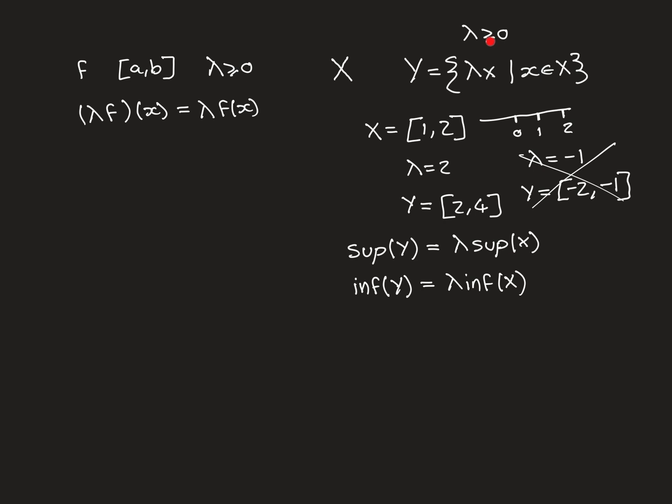The results still hold when lambda = 0, of course. If lambda = 0, then multiplying every element of X by 0 gives a set containing only the single number 0. That set has supremum 0 and infimum 0, and the results correctly predict this since lambda × sup(X) = 0 and lambda × inf(X) = 0. So it's a trivial case, but the results do hold.